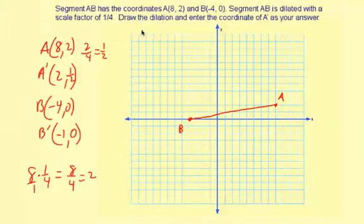Now let's go ahead and plot the new points. A' is (2, 1/2), so right 2 and up 1/2, and you just have to estimate where 1/2 is on the graph. It's about right there, A prime. And then for B prime, it's (-1, 0), so right there.